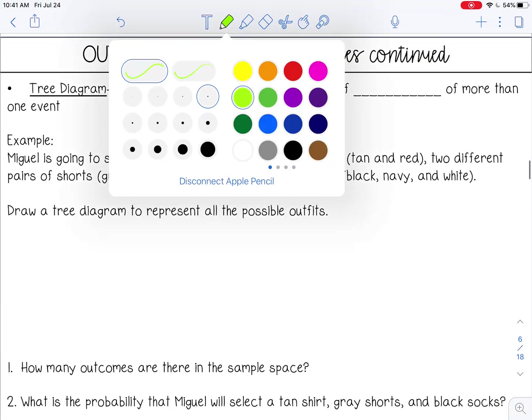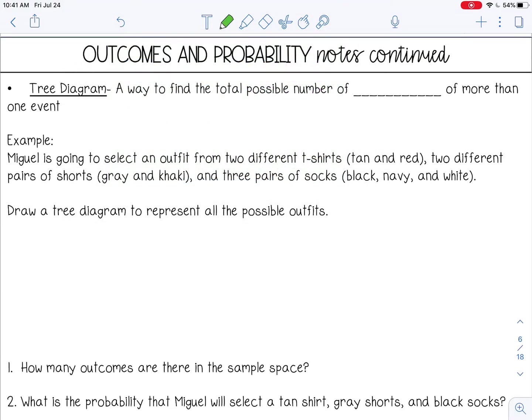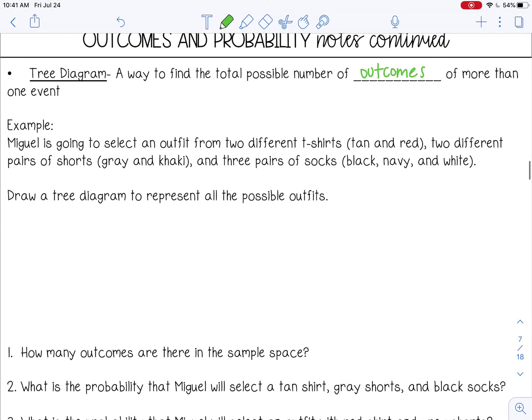Next, we want to talk about a tree diagram. A tree diagram is a way to find the total possible number of outcomes of more than one event. So here's an example. Miguel is going to select an outfit from 2 different t-shirts, tan and red, 2 different pairs of shorts, gray and khaki, and 3 pairs of socks, black, navy, and white. We want to draw a tree diagram to represent all the possible outfits that he can make.